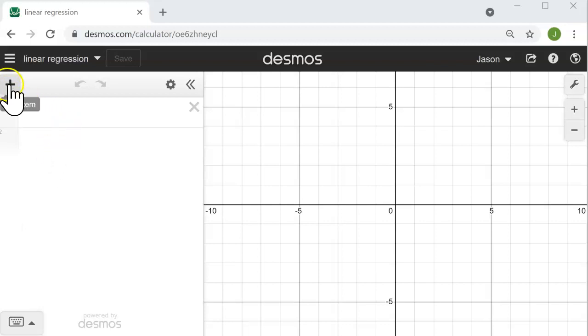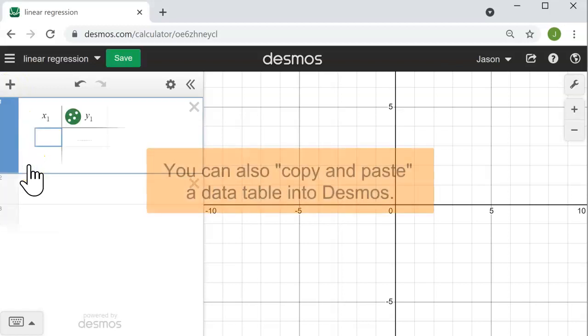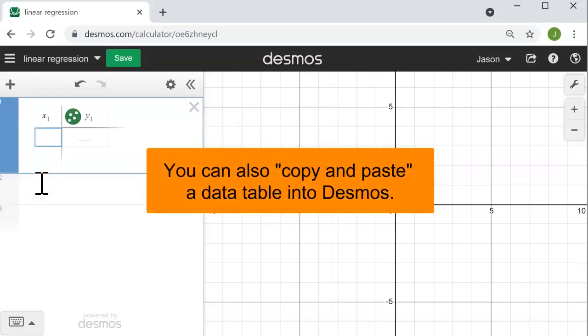I want to start by clicking on the plus sign here and entering a table. I'm going to type the data values into the table.